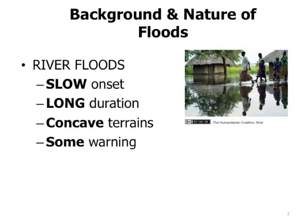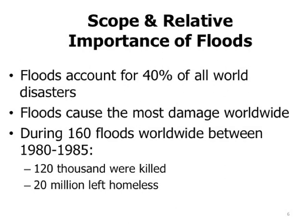River floods are usually slow onset but of long duration and are associated with low-lying concave terrains, especially with people settling in these areas. They usually provide some warning. Floods account for 40% of all wild disasters and cause the most damage worldwide.